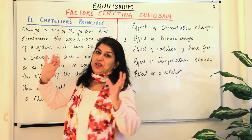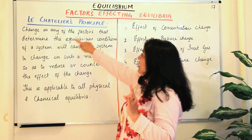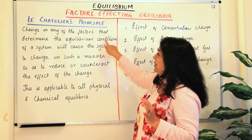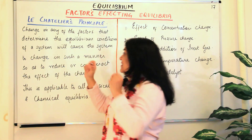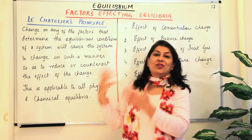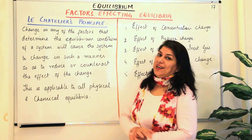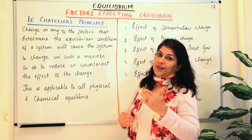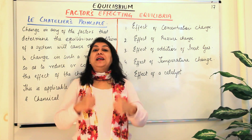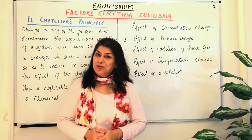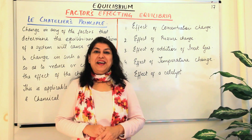So these are the factors that affect chemical equilibria, and of course physical equilibria too. Let me just repeat Le Chatelier's principle: a change in any of the factors that determine the equilibrium conditions of a system will cause the system to change in such a manner so as to reduce or counteract the effect of that change. In the consecutive videos we are going to deal with each of these factors in more detail. If you found the video helpful, please give it a thumbs up, subscribe to my channel, recommend it to your friends, and keep returning for more chemistry videos. Thank you for watching.